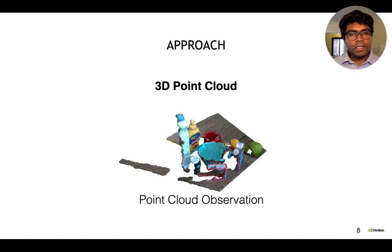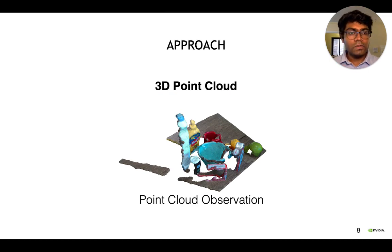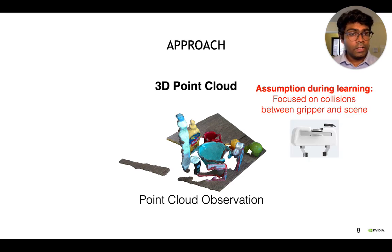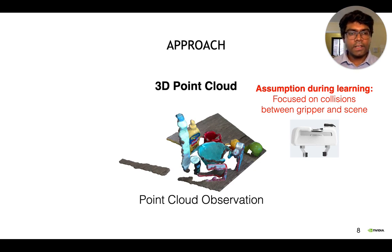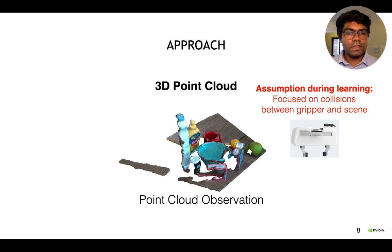We can use the depth information to get the 3D point cloud, but as you can see, the point cloud isn't perfect — it has a lot of holes and missing points due to occlusions. Another assumption is that during learning, we only focus on the collisions between the gripper and the scene; we don't really consider the arm. This worked pretty well for us in practice, and if necessary, we can also consider the arm in our framework.